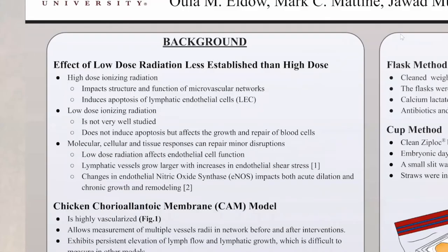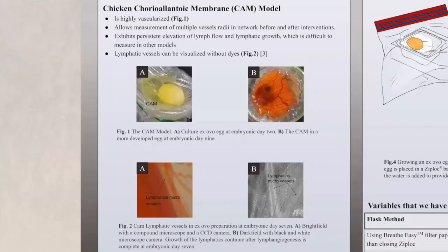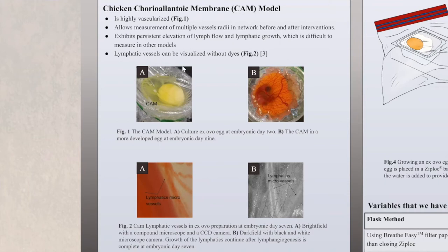To study lymphatic vessels, the model that we're using is the chicken chorioallantoic membrane, or CAM. The reason why we're using this model is because it is highly vascularized, so we can easily visualize the vessels. It also allows for measuring before and after intervention measurements — like measuring the radii of blood vessels before and after radiation. It also allows us to visualize the vessels without dye, just by using a microscope, as we can see in these pictures, showing the blood vessels and the lymphatic vessels.